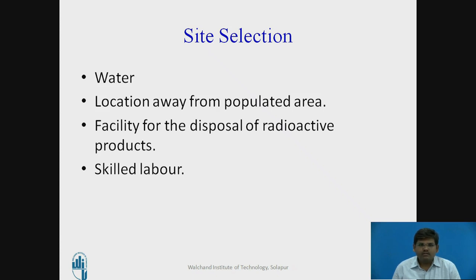Second, the location away from the populated area. As nuclear fuel is being involved in the generation of electricity, the area in and around the power plant is radioactive. So, for safer conditions, it should be away from highly populated areas.